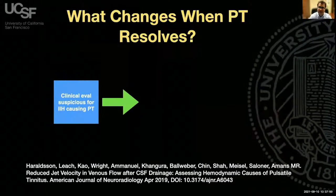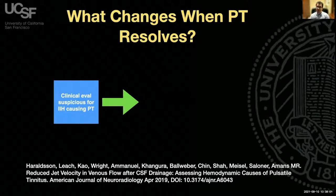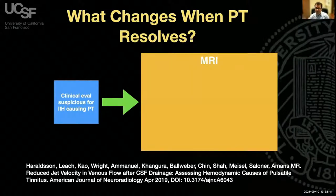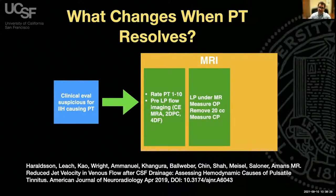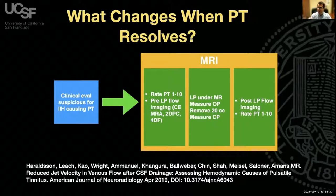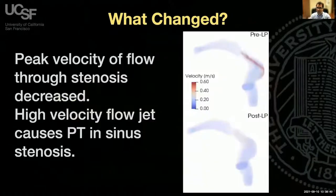We can use these techniques to see what changes when pulsatile tinnitus resolves. We took IIH patients, had them rate their pulsatile tinnitus, performed anatomic MRI and 4D flow imaging of the transverse and sigmoid sinuses, then performed an MR-guided lumbar puncture to drive down pressure while still in the magnet. Most patients' pulsatile tinnitus completely resolved. We then repeated anatomical and flow imaging to see what changes when the sound goes away. The high-velocity flow jet present pre-LP essentially resolves post-lumbar puncture, correlating with symptom resolution.